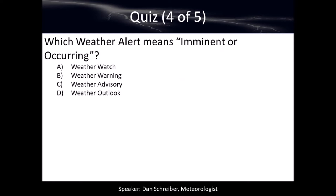Which weather alert means imminent or occurring? A weather watch means we're just watching for severe weather — it has potential for occurring, not that it's necessarily occurring. Watch is always accompanied with the word 'potential.' A weather advisory could mean nuisance weather that's imminent or upcoming, but it's more nuisance-level. A weather outlook is just a forecast. The correct answer is weather warning — if you hear a tornado warning, it is imminent or it's occurring. Take cover now. If you hear a watch, that just means heads up, we're going to be watching for this weather.